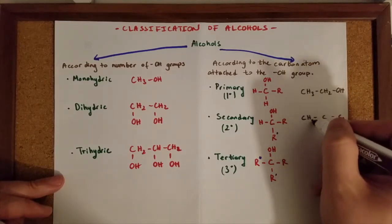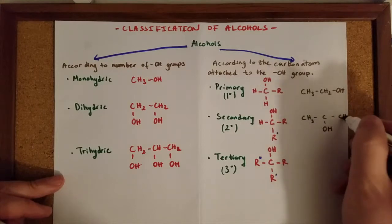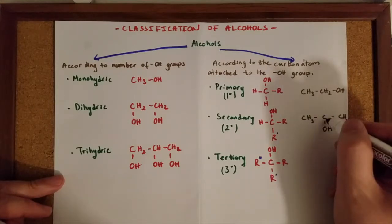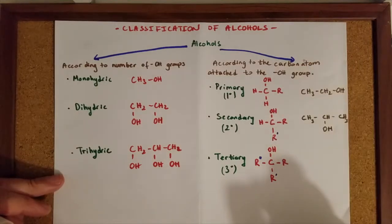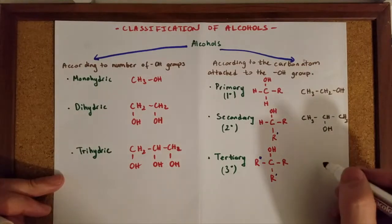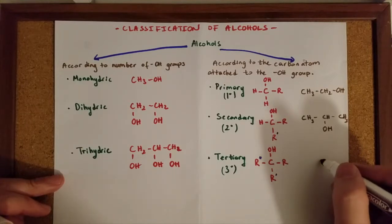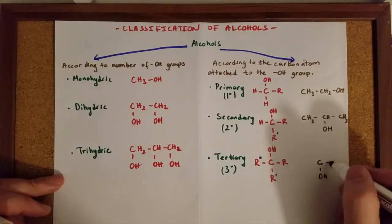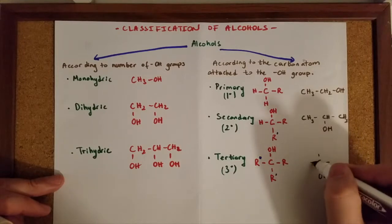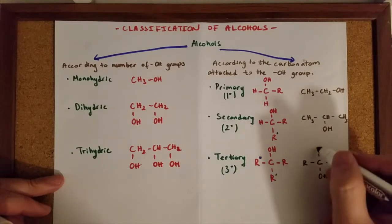They are CH3 and CH3. The fourth connection of this carbon atom is with a hydrogen. Finally, in tertiary alcohols, the carbon atom which is attached to the OH group is connected to three radicals.